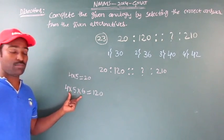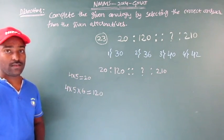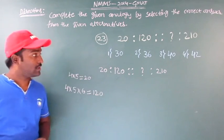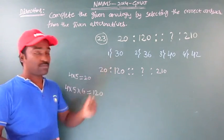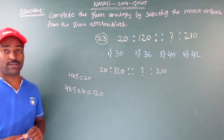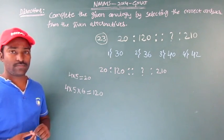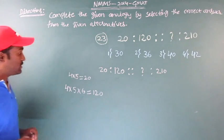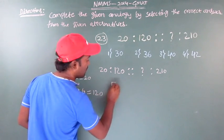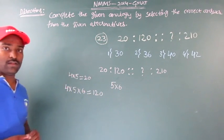The same analogy can be used to get that missing number. I will use the first option here. First option is 30. How can I write 30? I can write it as 5 into 6: 5 into 6 is 30.